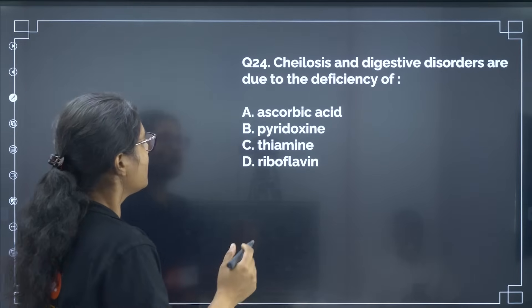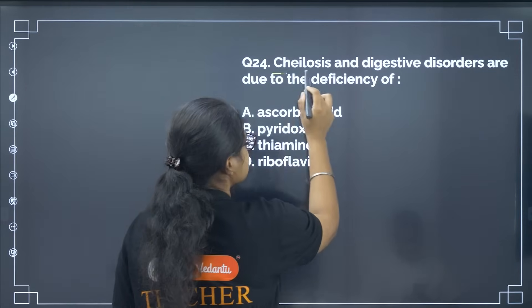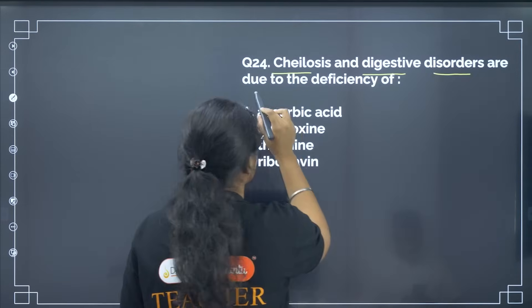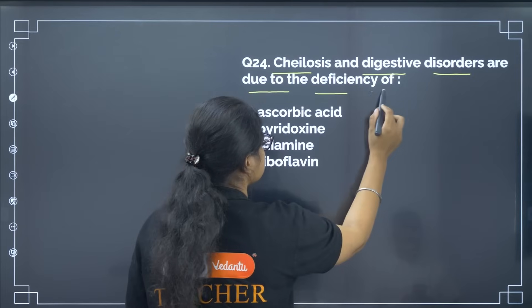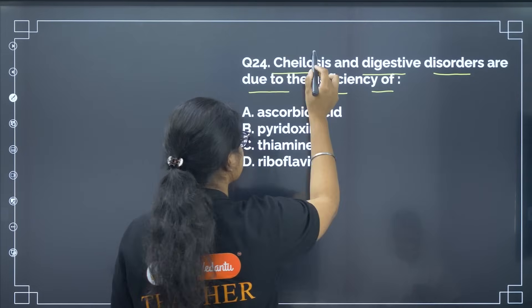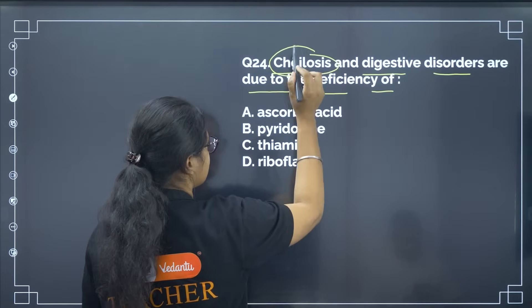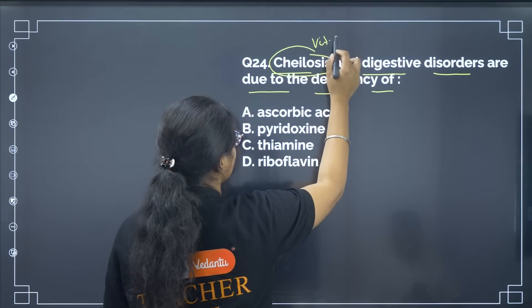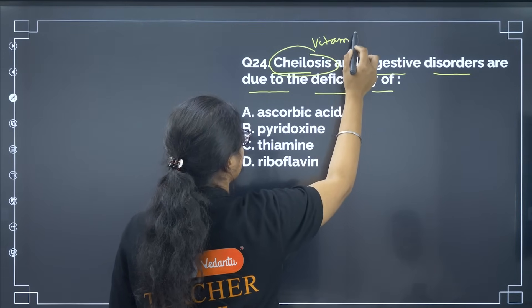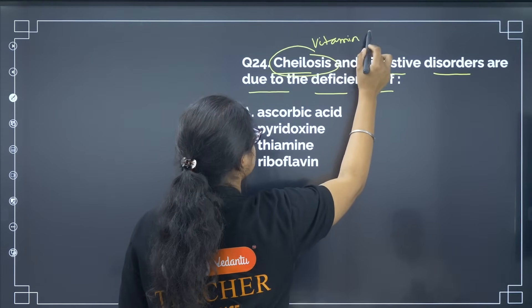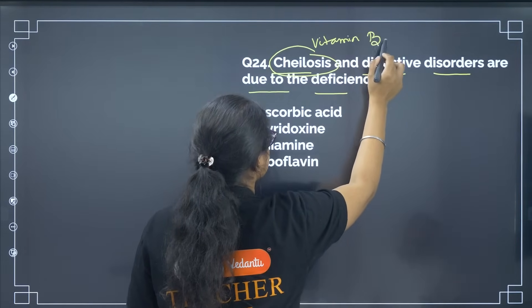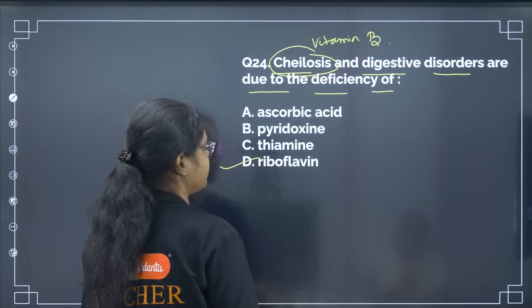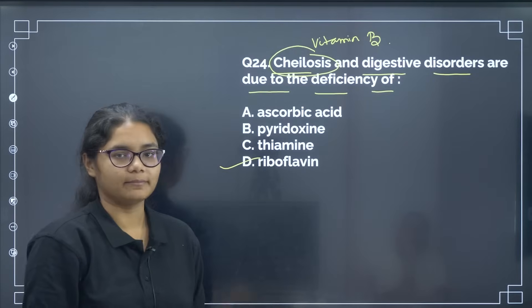Pellagra and digestive disorders are due to the deficiency of which vitamin? This is a deficiency disease of vitamin B. The correct answer is riboflavin, option number D.